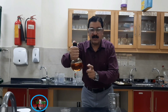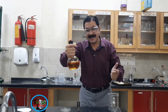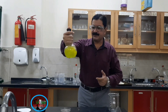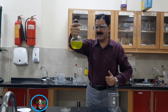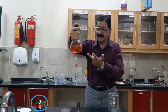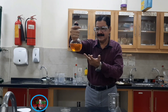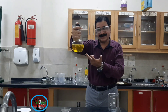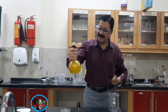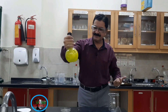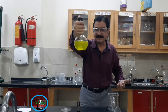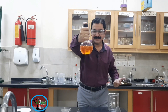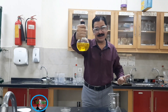Now our traffic light bottle solution is ready. If I shake it, the color turns green, and after some time red, and then yellow color. Again if I shake, the color turns green, then red, and then yellow.